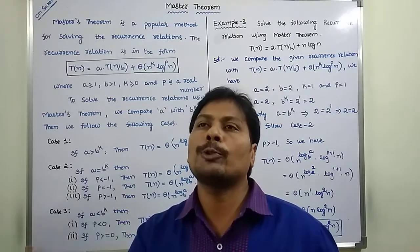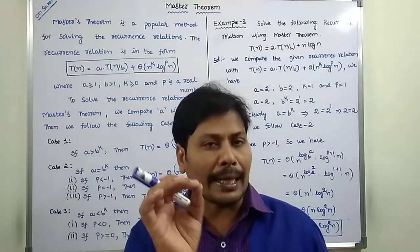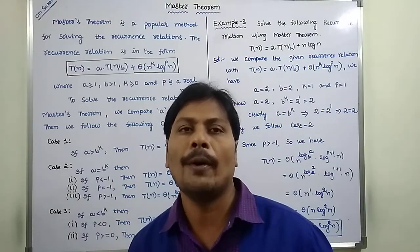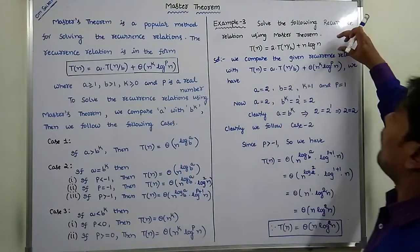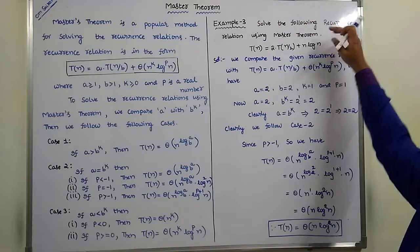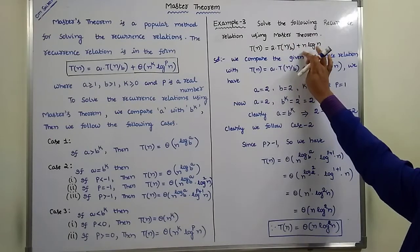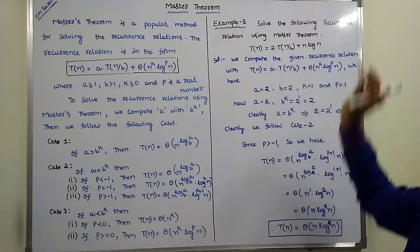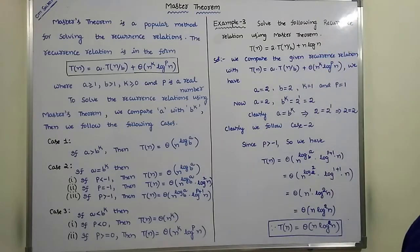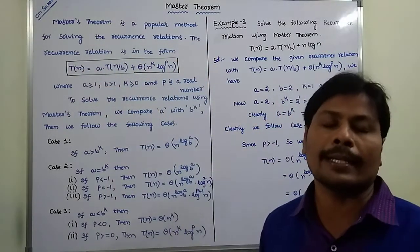We have to find out the time complexity of a given recurrence relation using master theorem. This is Example 3. The given recurrence relation is T(n) = 2 * T(n/2) + n log n. This given recurrence relation is compared with the standard recurrence relation.